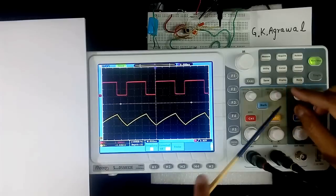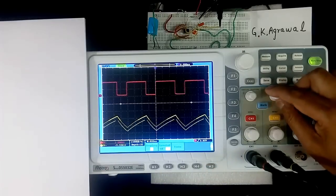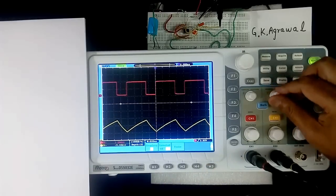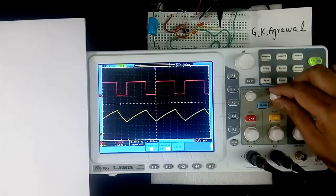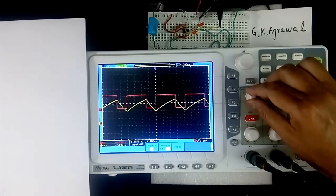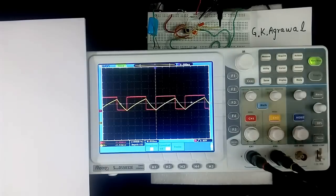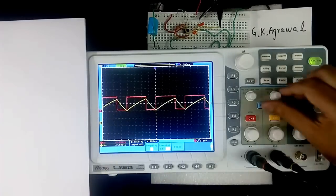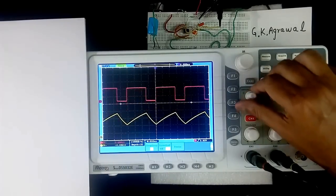Similarly for channel 2, there is another button. We can move like this. Advantage of this vertical position shift is both we can bring together, both wave shapes, and compare them. If this is away, this is difficult to compare.